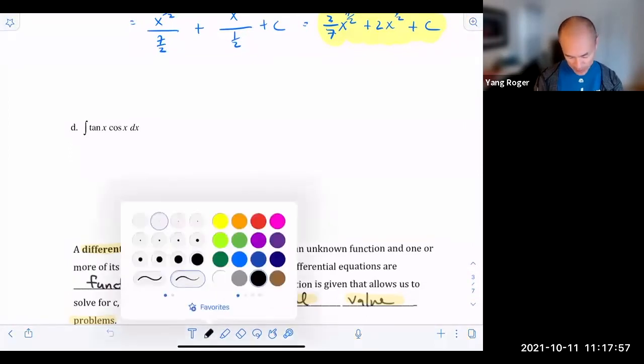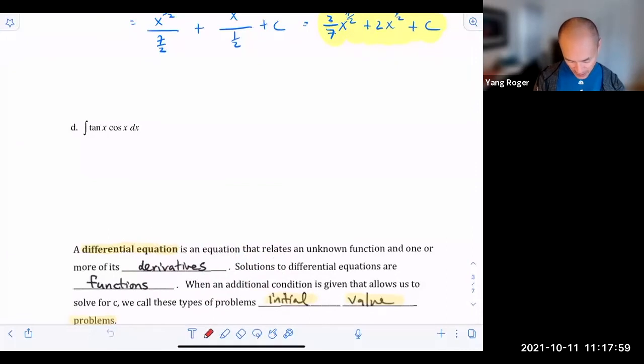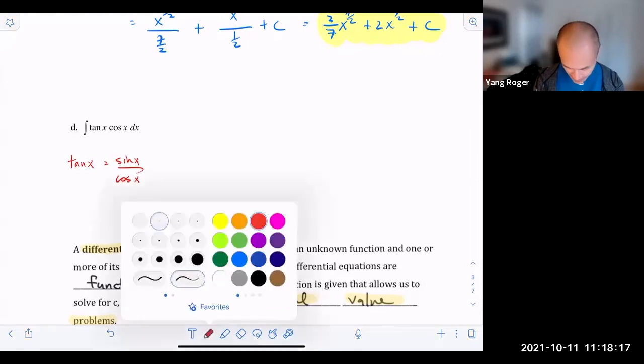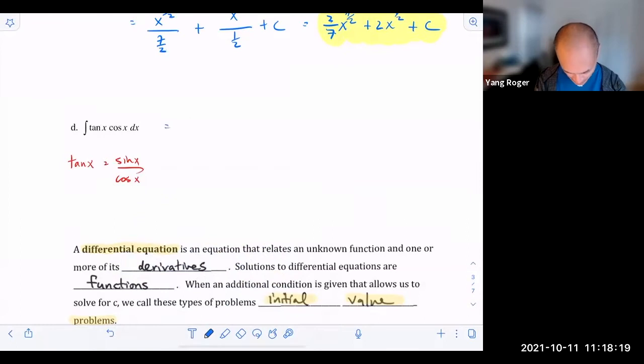What if I told you that there's a famous trig identity called the quotient identity? In other words, tangent of x is equal to sine of x divided by cosine of x. Would that change your mind? You're saying you could just take the tangent x and replace this with sine of x over cosine of x like this. So I could do this. And I'm saying, yes, you could do that.